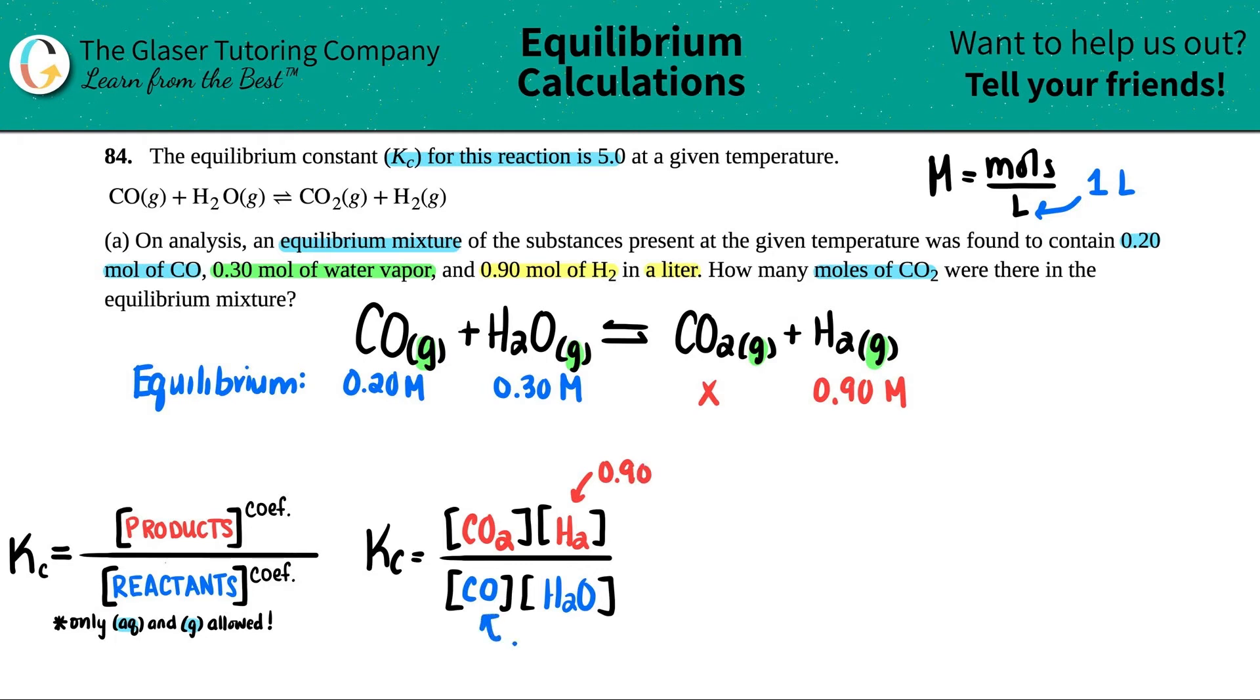They told us the Kc was 5.0, so now I'm ready to plug everything in. We have 5.0 equals - we got our x value (this is what we're solving for) - so x times 0.90, and then we're going to divide it by 0.20, and then that gets multiplied by 0.30.